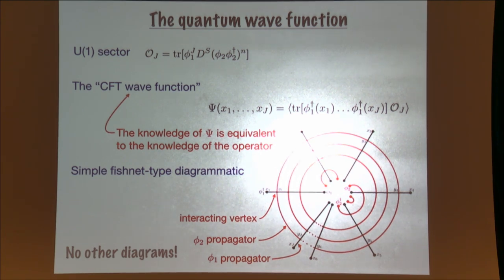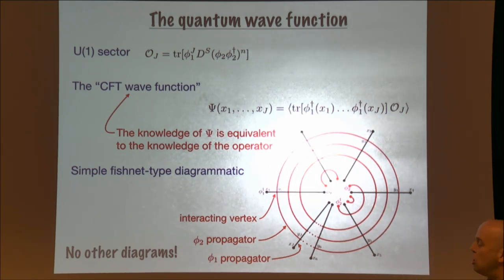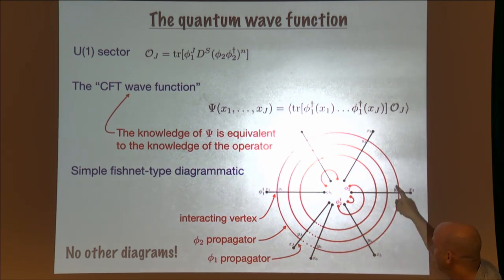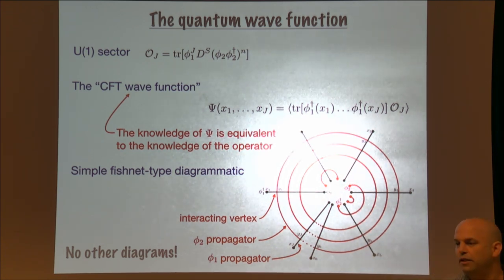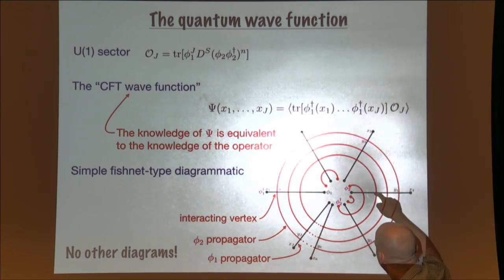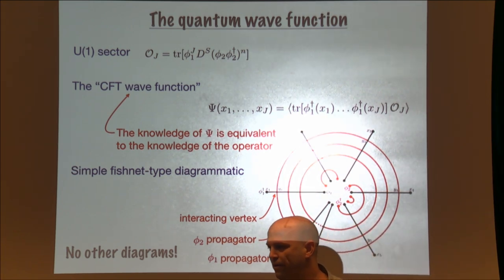One of the reasons for calling it a wave function is that in this model the diagrammatics are very simple. The only Feynman diagrams that contribute to this correlator are of this fishnet type — the black lines are the phi-1 propagators, the red lines are the phi-2 propagators forming the wheels of the fishnet, and any intersection point is a four-dimensional interaction point that we integrate over. No other diagrams survive in the planar limit because the conjugate interaction vertex is absent.